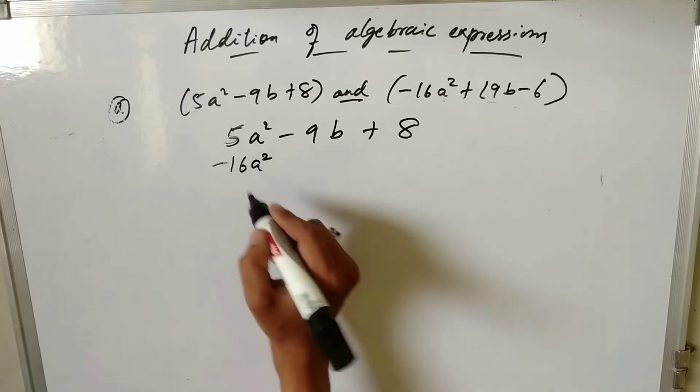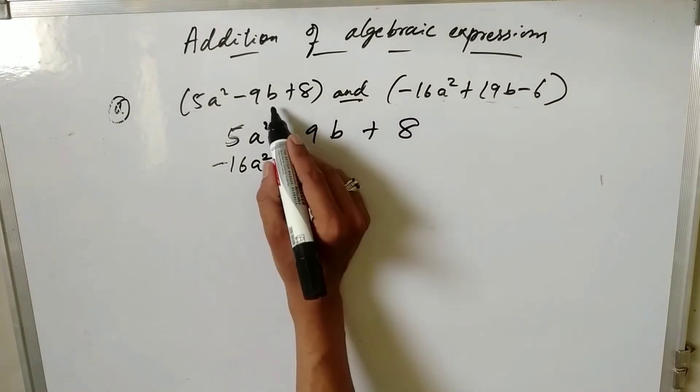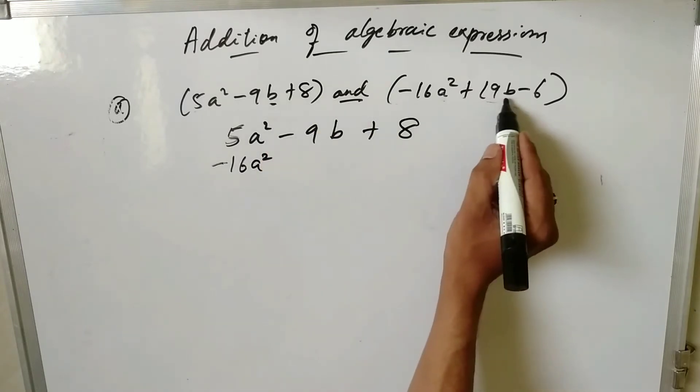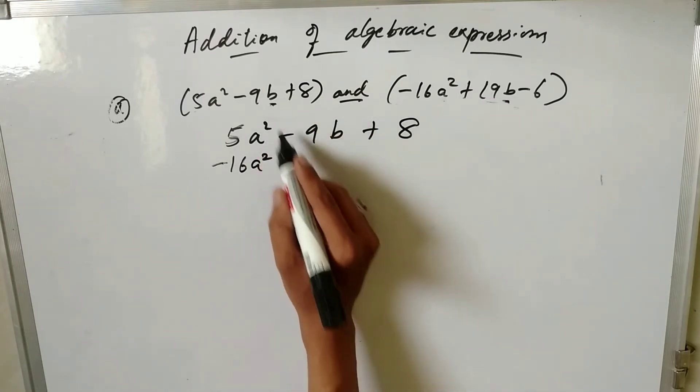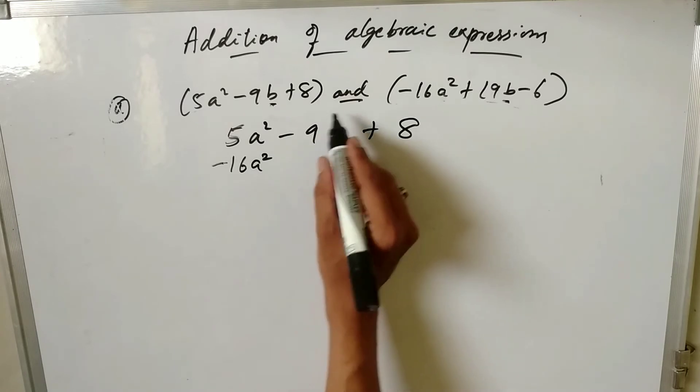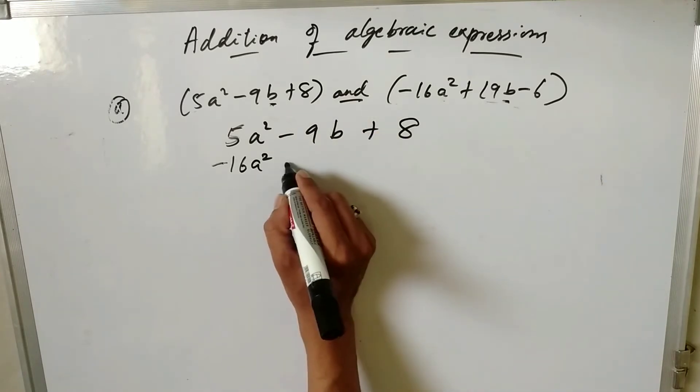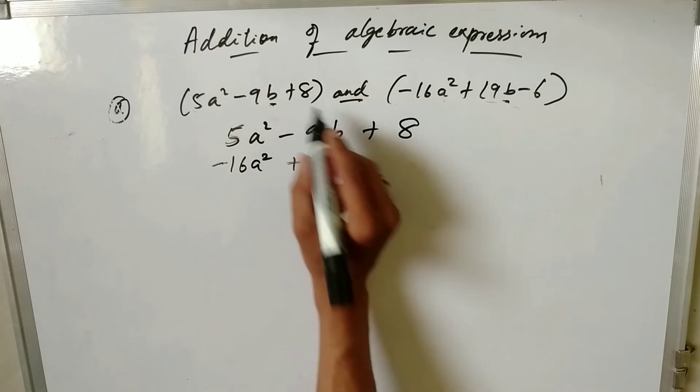Similarly, we have another term with the b letter. So for -9b, the b term is +19b. You have to write it below. Then next we have the constant +8.